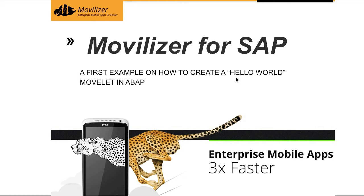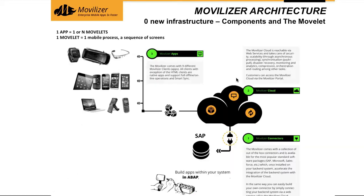Before we start, we briefly look at the architecture. To connect your SAP system to the Movilizer cloud, you install the Movilizer SAP connector, which is an add-on that you install in your SAP NetWeaver system. The Movilizer cloud is then connected to the Movilizer client.